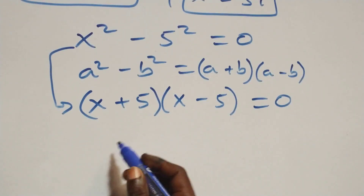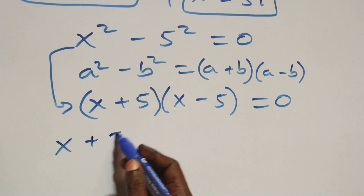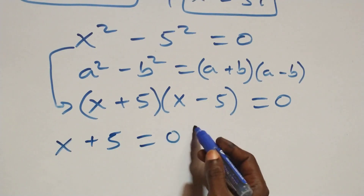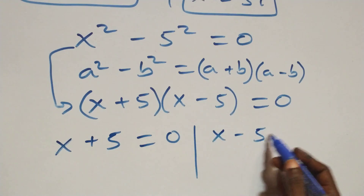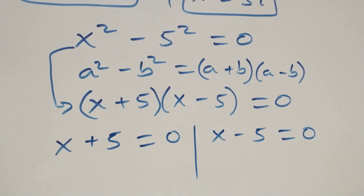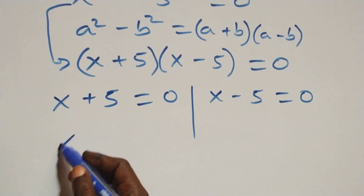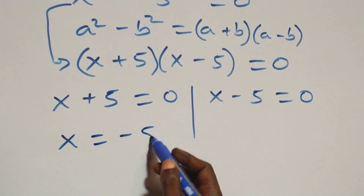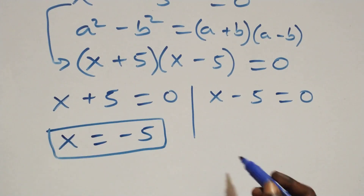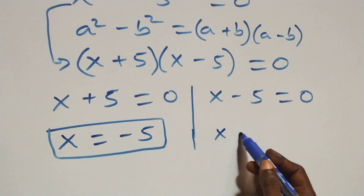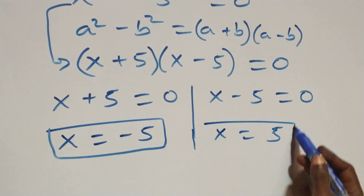Then we have 2 possible cases: x plus 5 equals to 0, or we have x minus 5 equals to 0. Solving: we have x equals to minus 5, which is a real solution. And also x equals to 5, which is also a real solution.